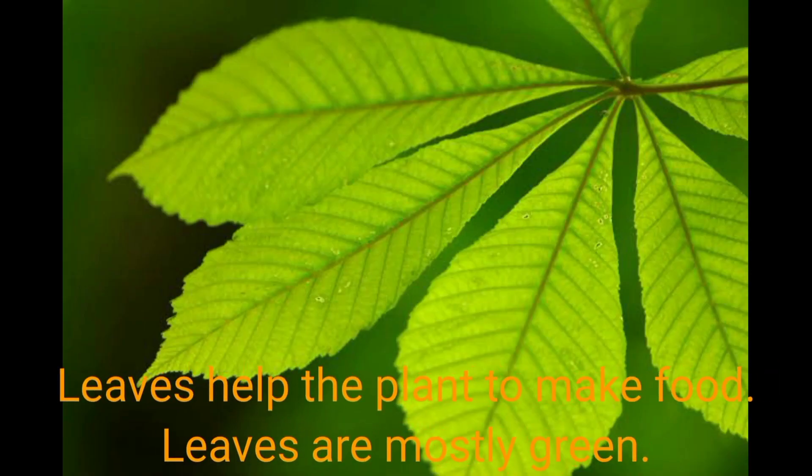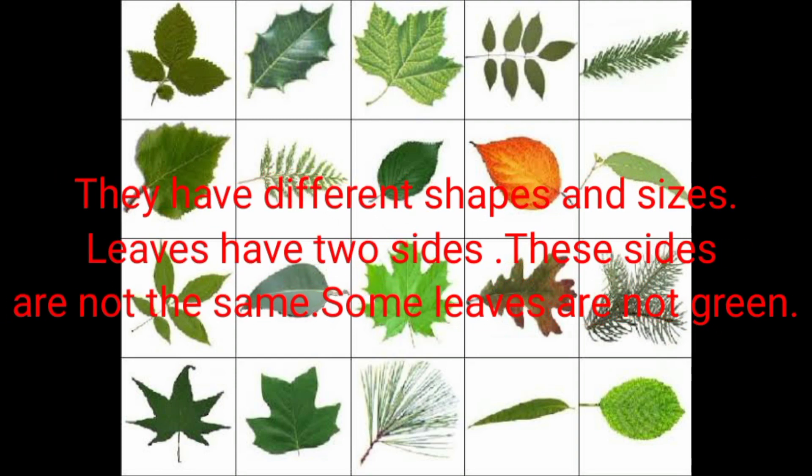Leaves help the plant to make food. Leaves are mostly green. They have different shapes and sizes. Leaves have two sides. These sides are not the same. Some leaves are not green.